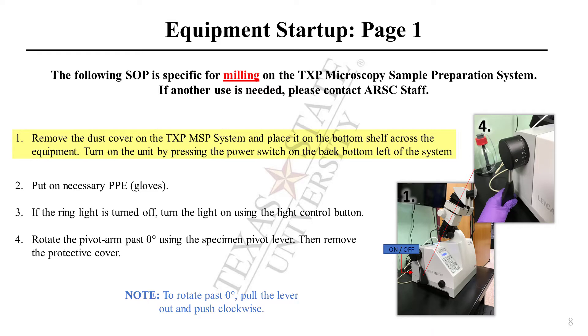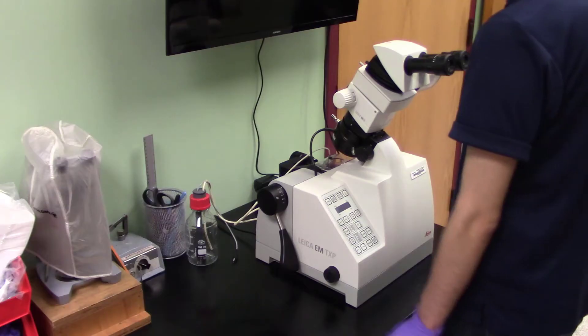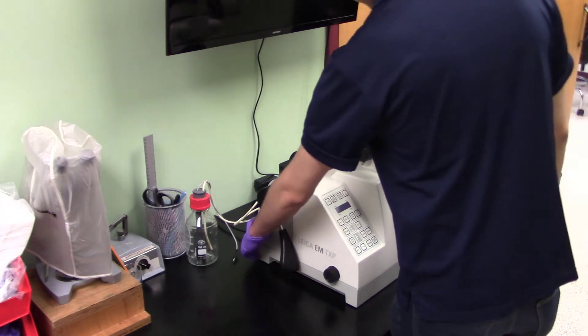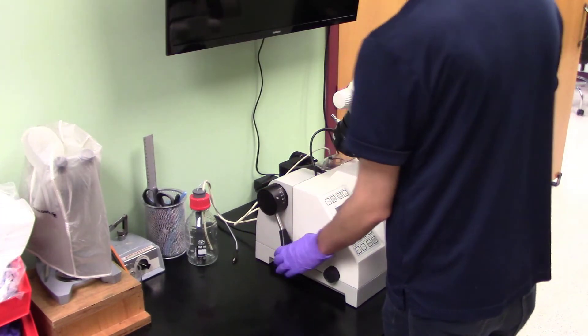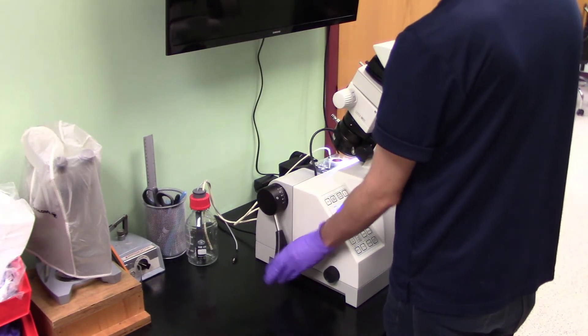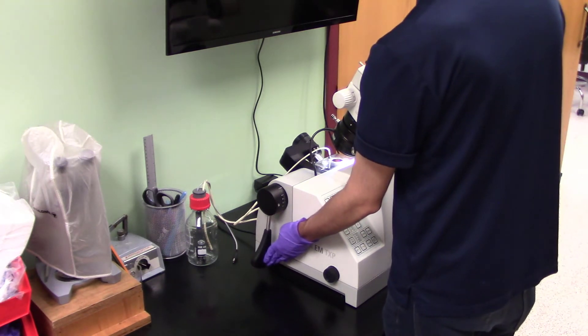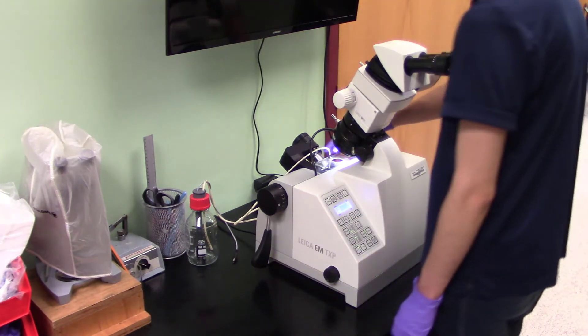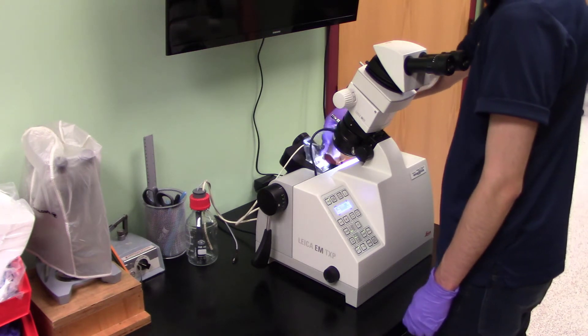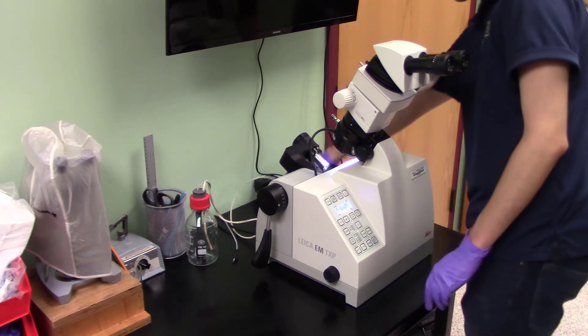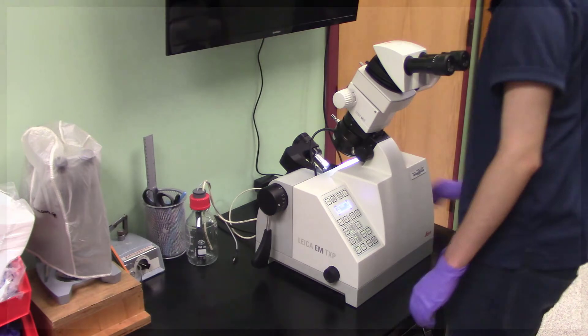To get started, remove the dust cover on the TXP MSP system. Turn on the unit by pressing the power switch on the back bottom left of the system. Put on the necessary PPE and rotate the pivot arm past 0 degrees using the specimen pivot lever. Then remove the protective cover.